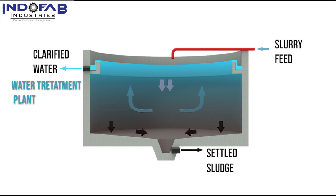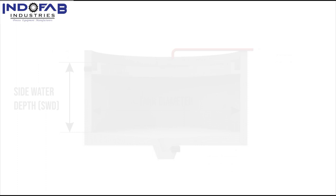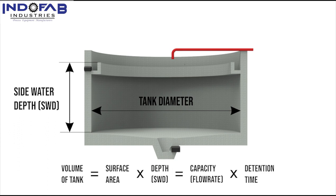When this clarified water is the required output, it's called a clarifier, as in the case of a water treatment plant. When the settled sludge is the required output, such as in extracting metals in a beneficiation plant, the unit is called a thickener. Now let's get to tank sizing.